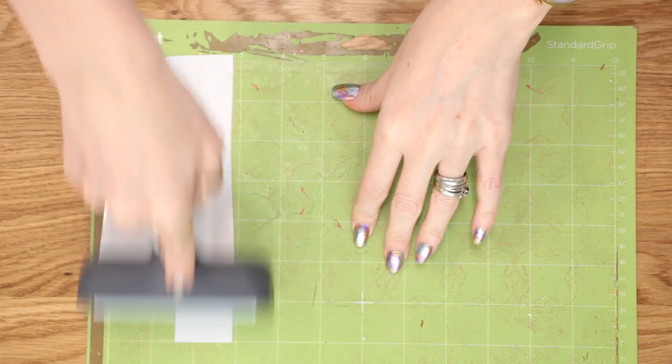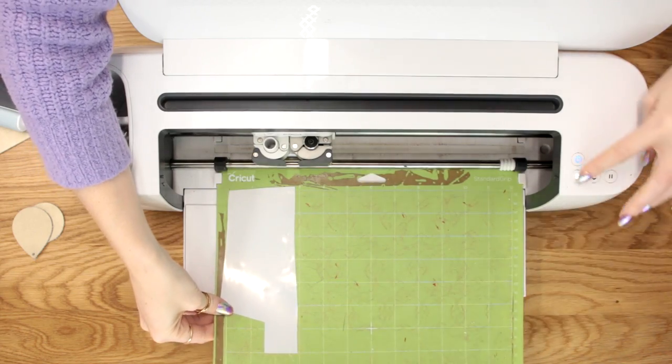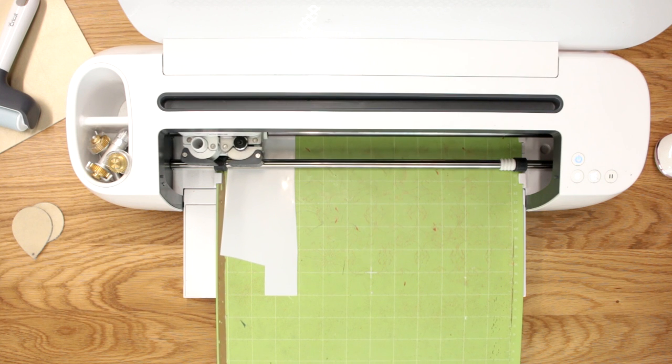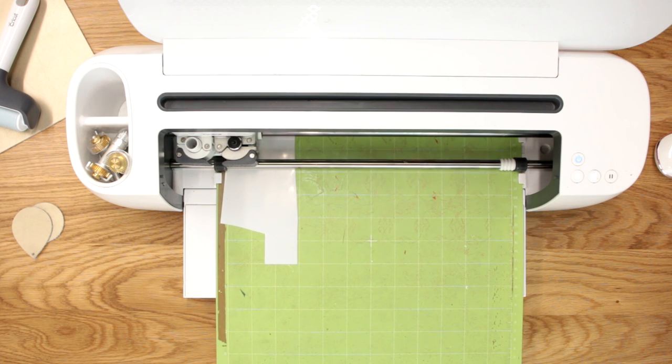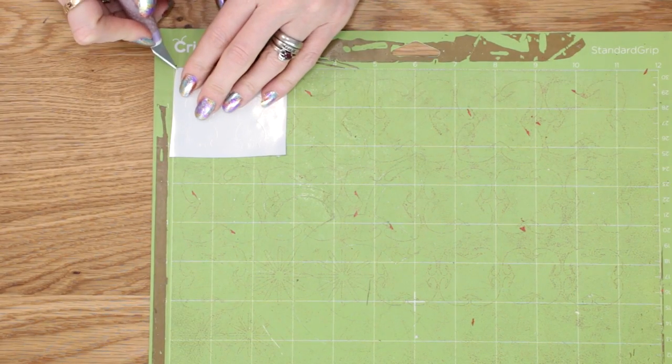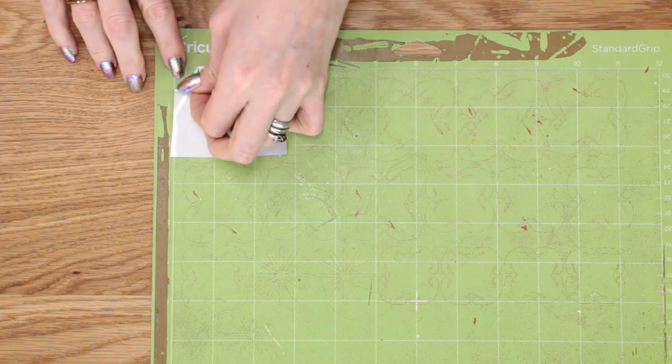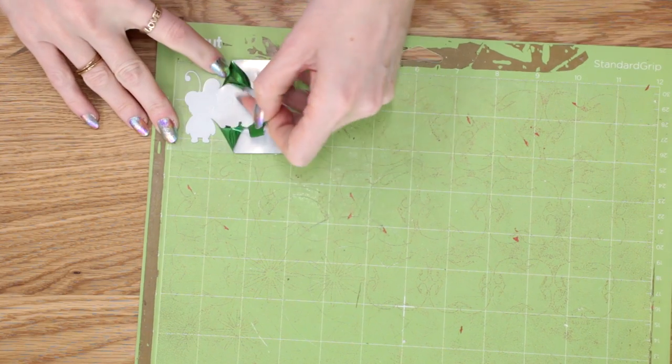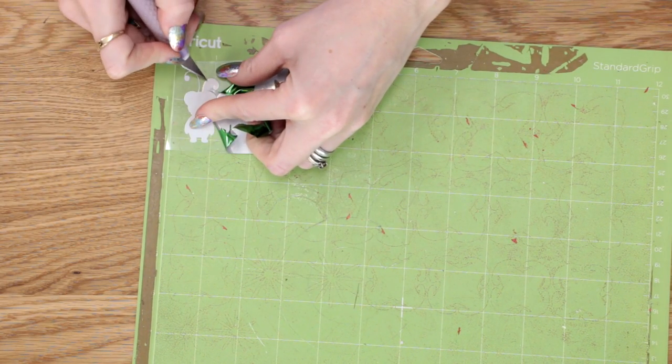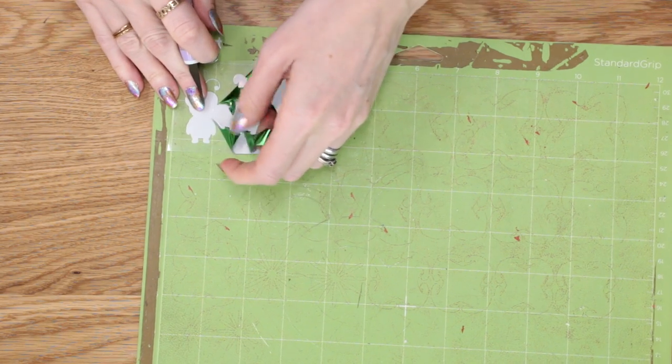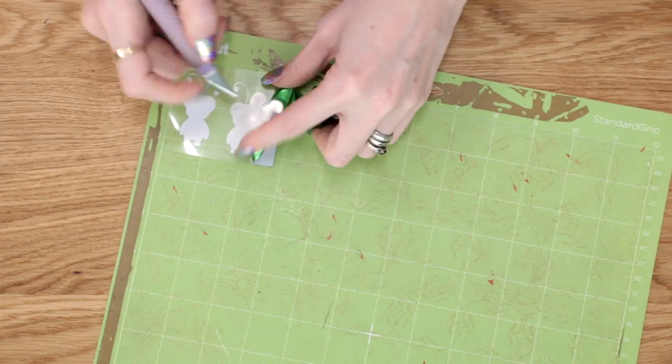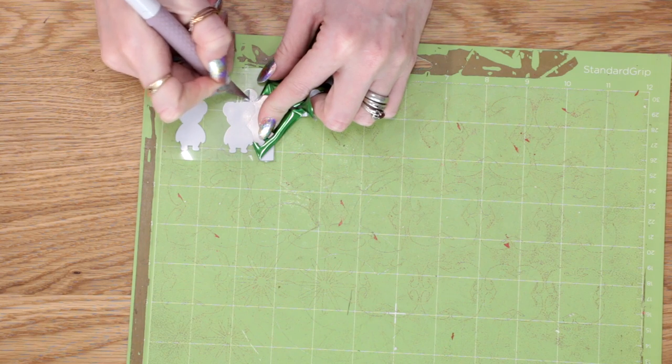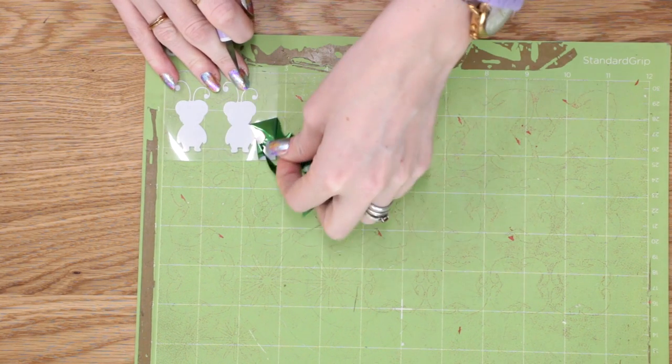We want to feed our mat through. You then want to come in and weed away the excess iron-on. I always find it easier to do it on the mat.